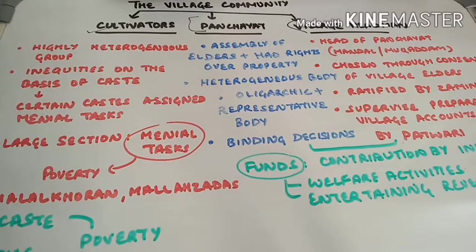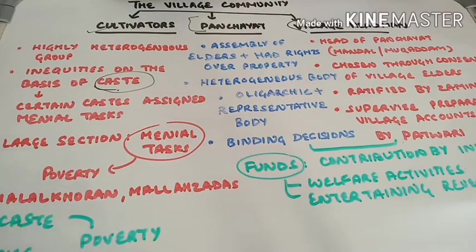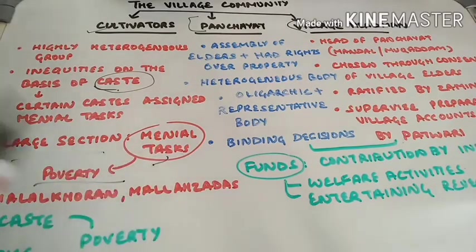Cultivators was a highly heterogeneous group, which means that it comprised of people coming from different castes, different social and economic backgrounds. Although it was a heterogeneous group, there were deep inequities which were marked on the basis of caste. So there was discrimination among these cultivators on the basis of their caste. Certain kinds of tasks were assigned to certain castes. Some examples of these castes were Halal Khorans and Mallazadas.